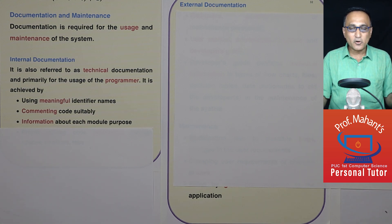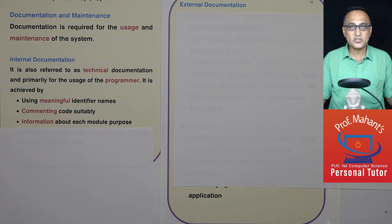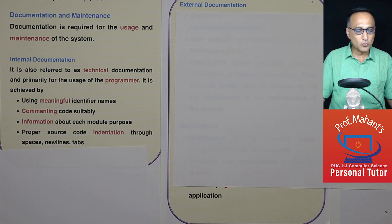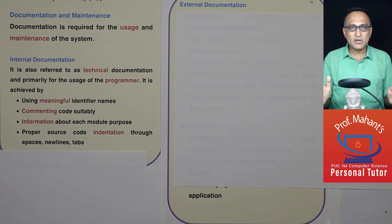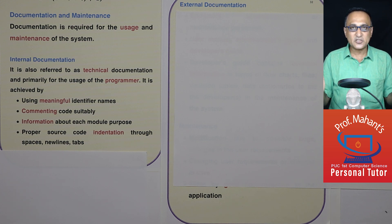For every module or every program, write what is the purpose of that program, what is the purpose of that function, what is the purpose of that procedure — so somebody, even without looking at the code, can understand what that code is trying to do. You should also use a suitable amount of spacing, known as indentation — proper spaces, tabs, and new lines — so that the program looks neat and clean.